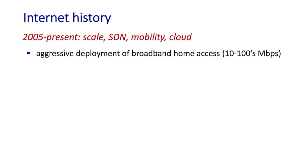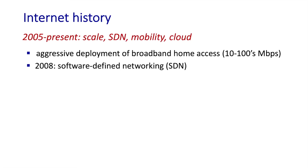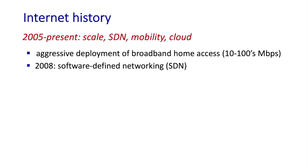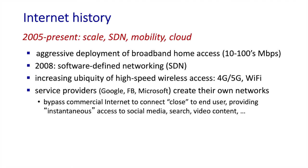From 2000 to 2005 and until the present, we've seen the aggressive deployment of broadband into the home, running at tens to hundreds of megabits per second. In 2008, software-defined networking was defined — we're going to take a very close look at that when we get to chapter five. We've seen the increasing ubiquity of high-speed wireless access — first Wi-Fi, and increasingly 4G and soon 5G networks. We've also seen service providers and content providers like Google, Facebook, and Microsoft creating their own global backbone networks.